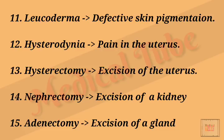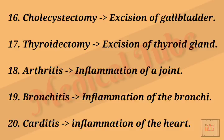Number thirteen: hysterectomy means excision of the uterus. Number fourteen: nephrectomy means excision of a kidney. Number fifteen: adenectomy means excision of a gland. Number sixteen: cholecystectomy means excision of the gallbladder. Number seventeen: thyroidectomy means excision of the thyroid gland. Number eighteen: arthritis means inflammation of a joint.